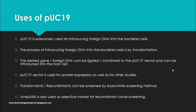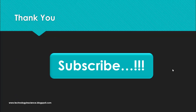PUC19 carries an ampicillin resistance gene, which serves as a selectable marker in the screening process. LB media for growing E. coli can be supplemented with a suitable amount of ampicillin to screen transformants. Bacterial cells transformed with PUC19 will be able to grow on the ampicillin plates. Thank you for watching — if you liked the video, please subscribe.